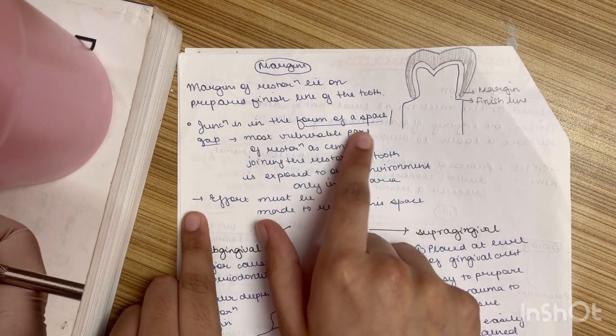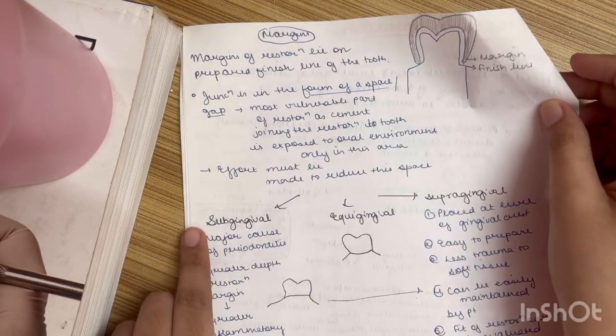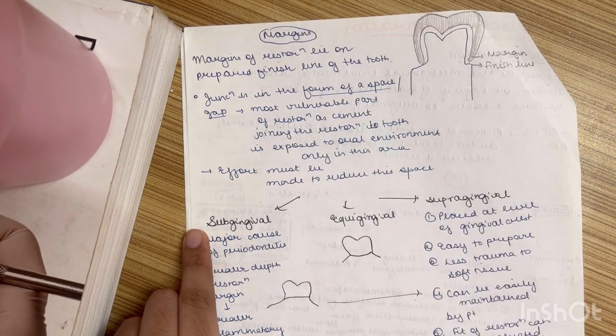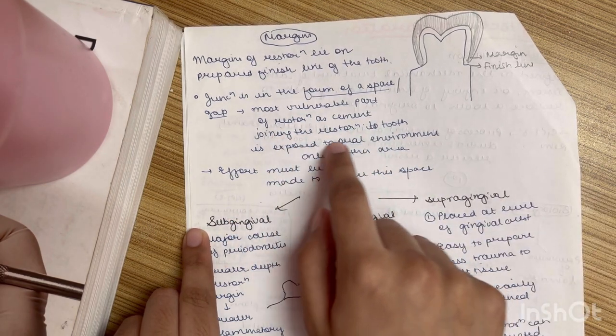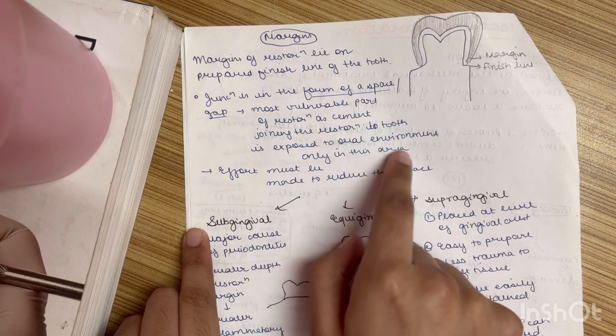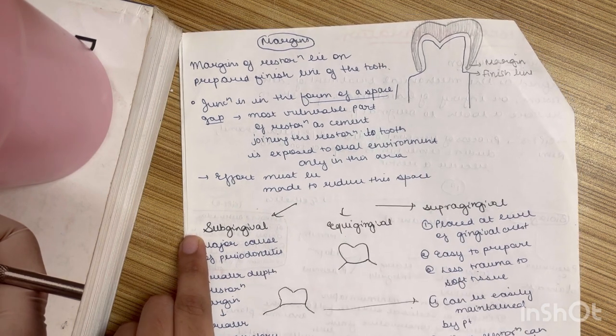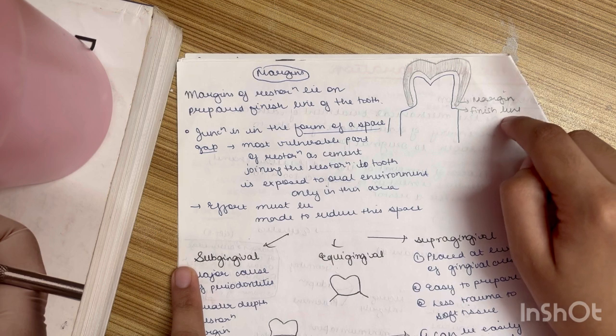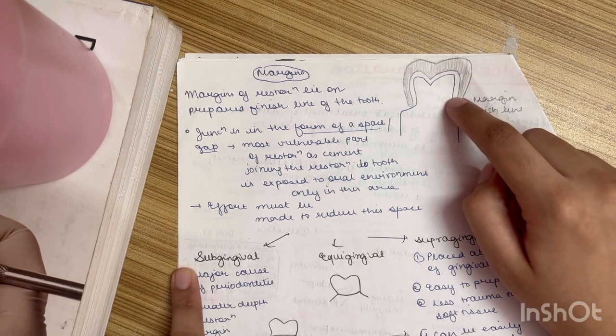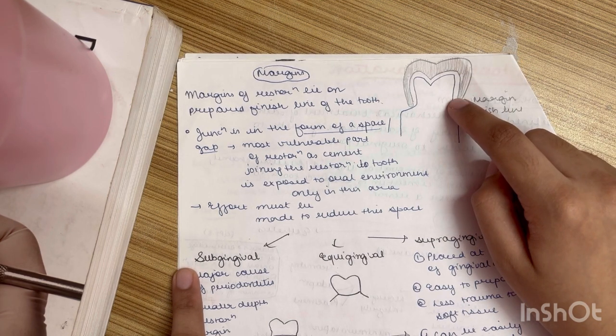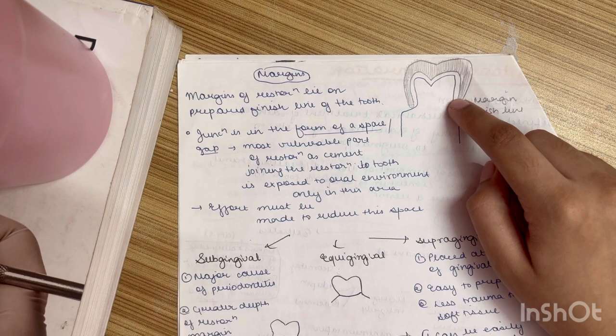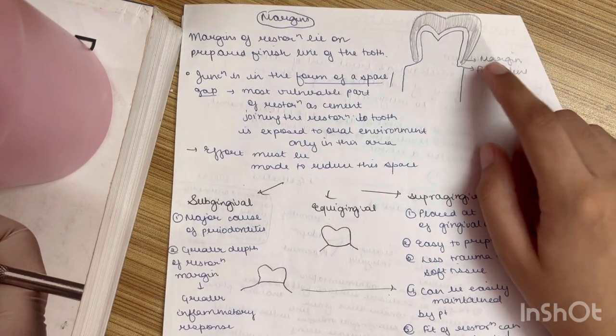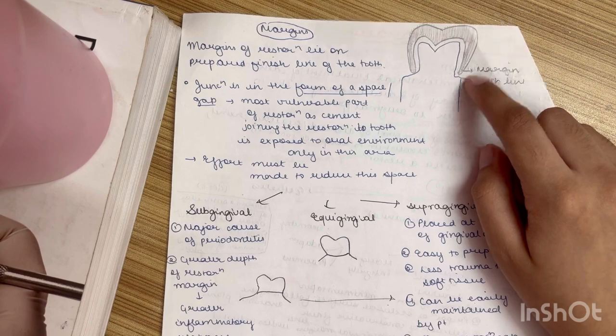This junction is in the form of a space. Now the gap, it is the junction gap, is the most vulnerable part of the restoration as the cement joining the restoration to tooth is exposed to oral environment only in this area. It is most prone to the fracture because it is exposed to the oral environment. Now effort should be made to reduce the space as much as we can.